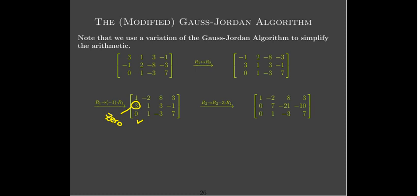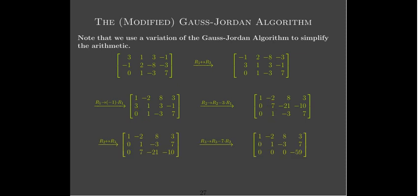Now I'm ready to move to the next column and get a one in the 2,2 position. Dividing by seven would create fractions in the fourth column, so instead I notice the third row already has a one. So I perform a swap between the second and third rows — now I've got a one where I want it. Then I need to eliminate the seven below it: take the third row and subtract seven times the second row, since seven minus seven is zero.